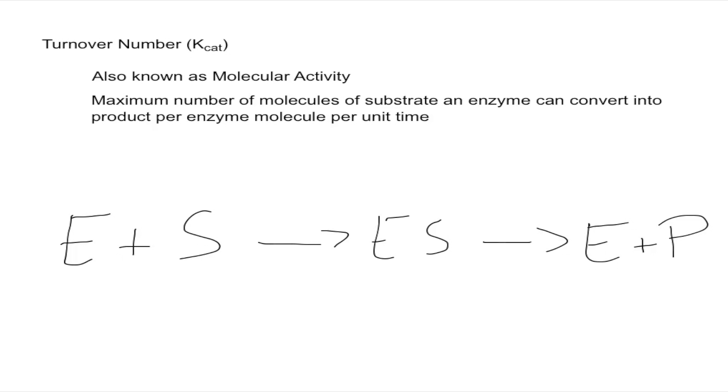It's the maximum number of molecules of substrate an enzyme can convert into products. That is this part right here. This is going to be our Kcat. We have the enzyme substrate complex and we want to know what is the maximum number of molecules of substrate that the enzyme can convert into product. How many products can we get with this enzyme?